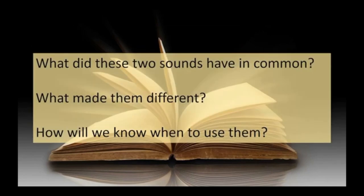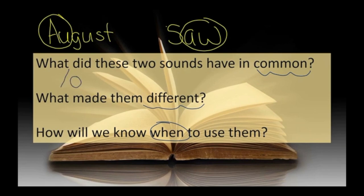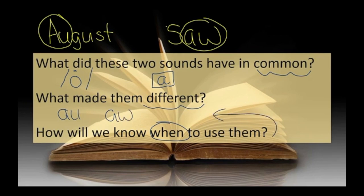Let's go ahead and talk about these two words. We had August with AW at the beginning, and we had saw with AW at the end. What do these two have in common? They both have the AW sound — we write that with an O that has a dot over the top. Each of these also has the letter A within the sound. What makes them different is the letter that goes with the A: in some AW words you have AU, and in some AW words you have AW.